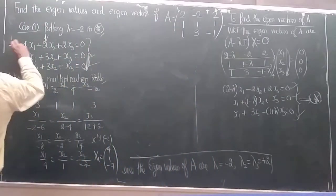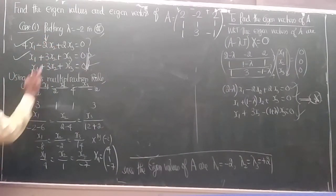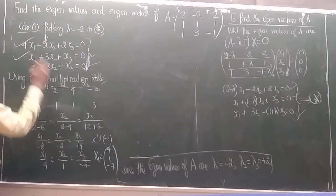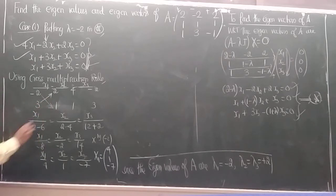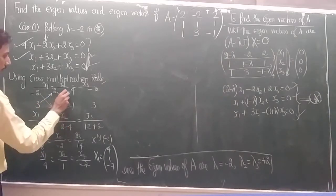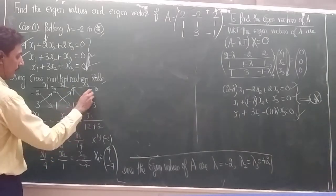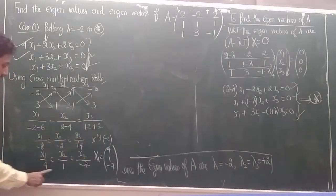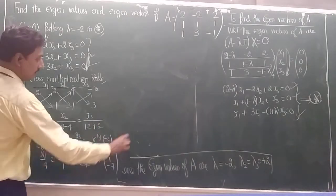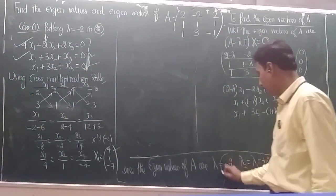Using the cross multiplication rule with equations 1 and 2, the coefficients are: for x₁: (−2)(1) − (3)(2) = −2 − 6 = −8. For x₂: (2)(1) − (1)(4) = 2 − 4 = −2. For x₃: (4)(3) − (1)(−2) = 12 + 2 = 14. Multiplying by −½ gives x₁:x₂:x₃ = 4:1:−7. So the first eigenvector corresponding to λ = −2 is [4, 1, −7].